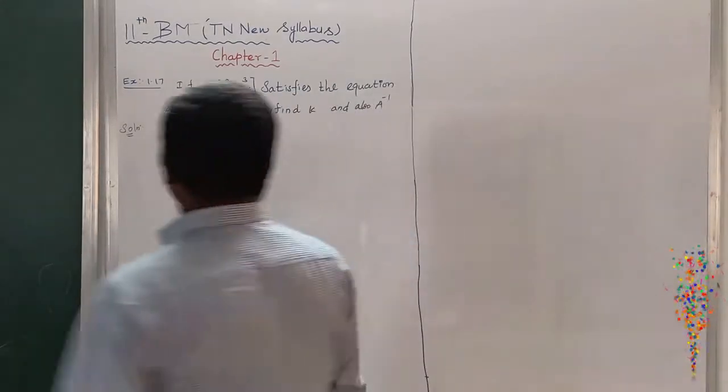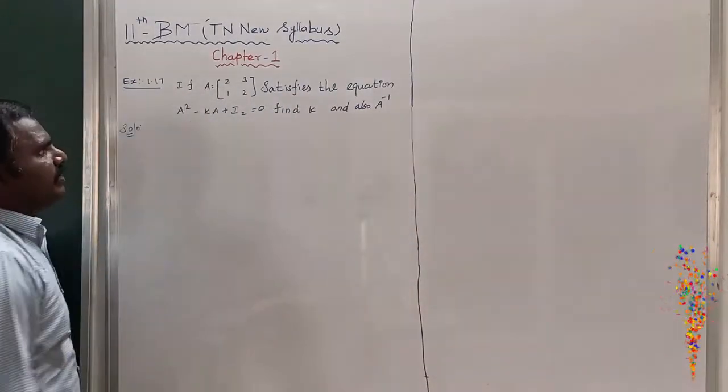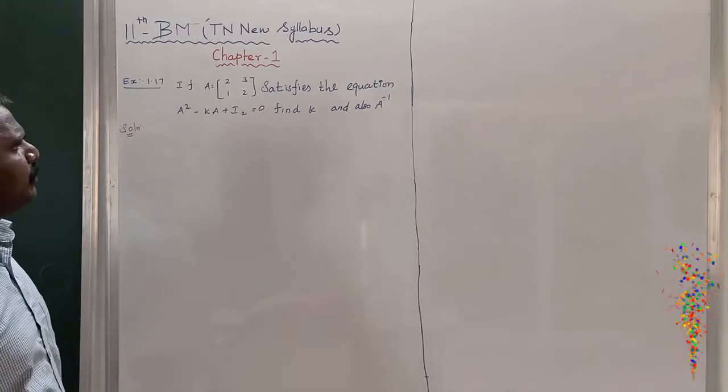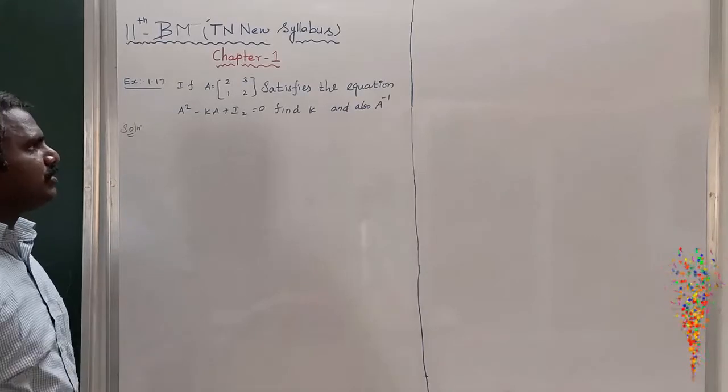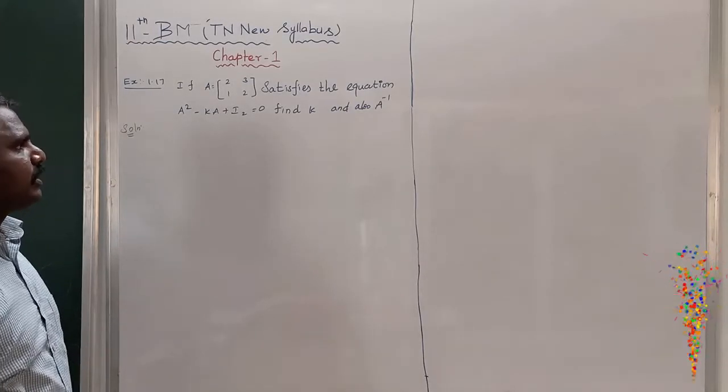Next example, example 1.17. If the matrix A = [[2,3],[1,2]] satisfies the equation A² - KA + I2 = 0, find K and also A inverse.